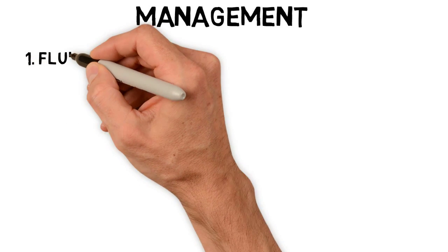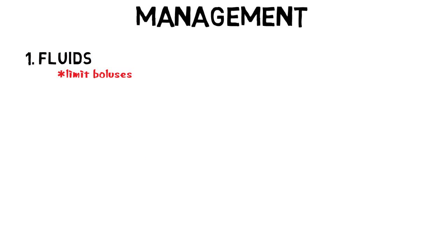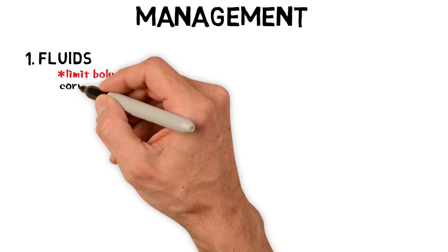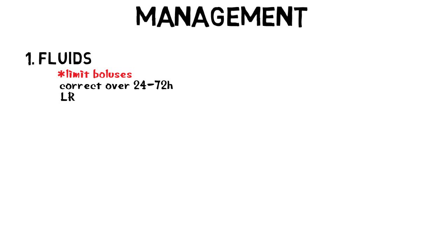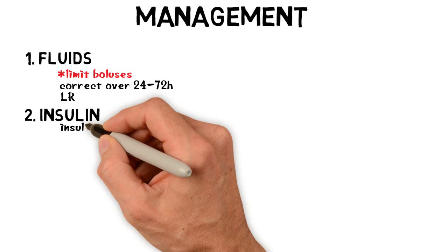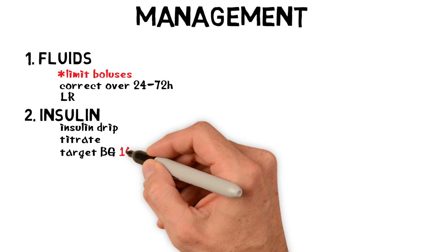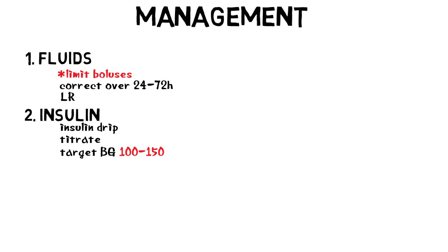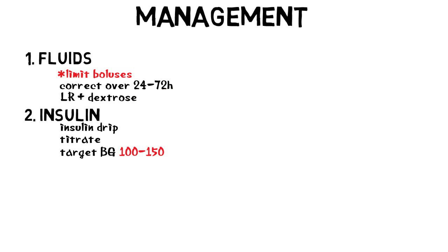The first step in treatment is to address volume depletion. Rapid fluid correction should be limited unless hemodynamic compromise is present. The remaining fluid deficit is corrected over 24 to 72 hours. The next step is to address insulin deficiency. An insulin drip is started and titrated hourly with a goal glucose of 100 to 150. The initial hyperglycemia corrects rapidly, so dextrose-containing fluids should be started to prevent hypoglycemia.